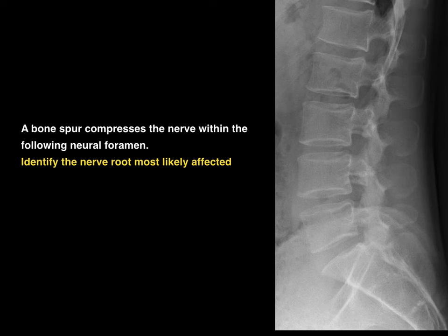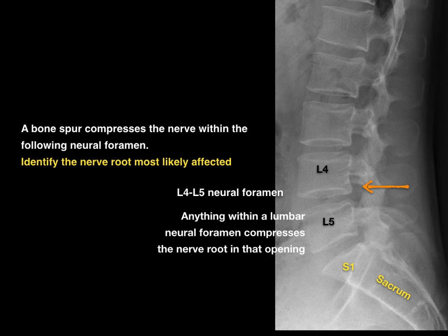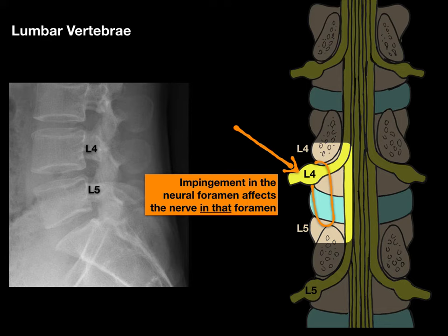Another question: a bone spur compresses the nerve within the following neural foramen — identify the nerve root most likely affected. There's the sacrum, so that's S1; then L5, L4. That means it's the L4-L5 neural foramen. Anything within a lumbar neural foramen compresses the nerve in that opening. The L4 nerve is what's coming out of that foramen, so it's the L4 nerve root. Looking at the L4-L5 pedicles with the L4-L5 neural foramen, it's the L4 nerve that would be impinged.